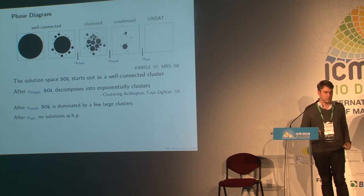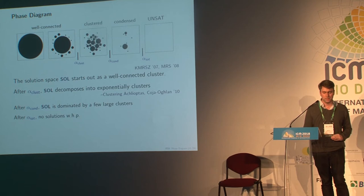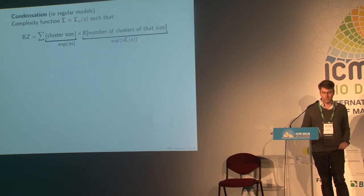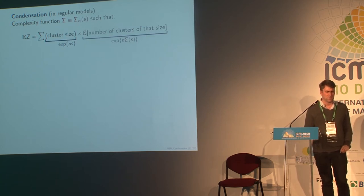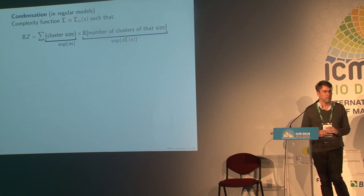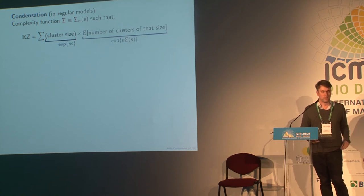These were quite qualitative descriptions of the different phases, but they come with precise quantitative predictions as well — in particular, formulas for each of these transitions. I'll tell you about the condensation and satisfiability thresholds in the context of models on regular graphs, such as colorings of random regular graphs, because it's a bit simpler to state in this setting. A similar description applies to random KSAT and other models as well.